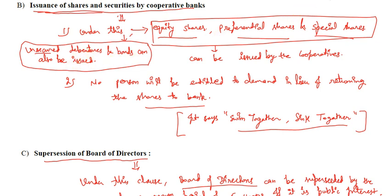There is one more condition: let's say a person A has invested in a certain bank and now the bank is under moratorium. The person wants to demand the return of their shares in the bank, meaning the person wants to disinvest. This provision restricts that person from being entitled to demand the return of shares to the bank. So ultimately we can say it is something like swim together and sink together.